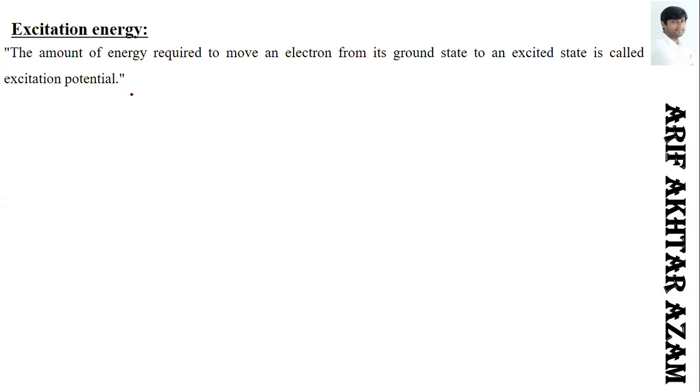The excitation is excited. When an electron is in a ground state, in the lower energy state, and moves to the higher energy state, we call it the excited state. The energy which is required for the electron to move from the ground state to the excited state is the excitation energy. That is the excitation potential.